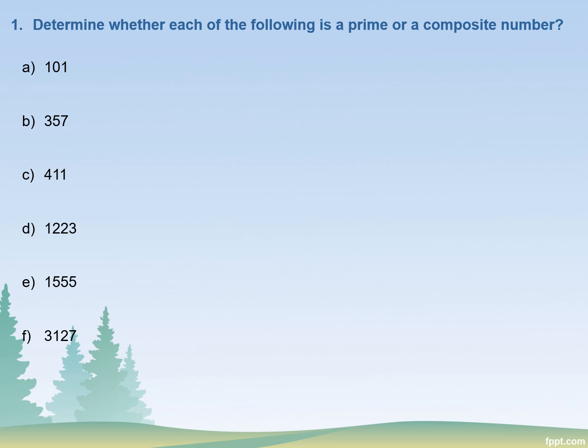This chapter is about determining whether each of the following is a prime or a composite number. For solving this question you must know what prime numbers and composite numbers are. Prime numbers are the numbers that are divisible only by themselves and by one. Apart from zero and one, every other number that is only divisible by itself and one is considered a prime number. All other numbers are basically composite numbers.